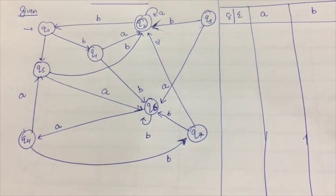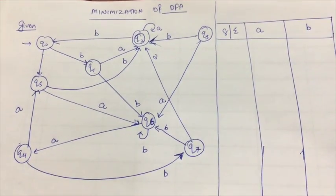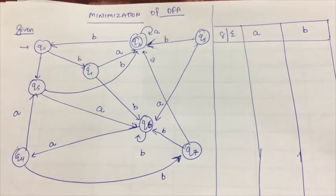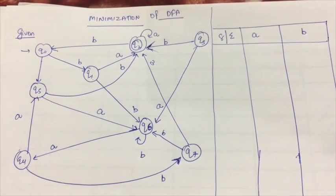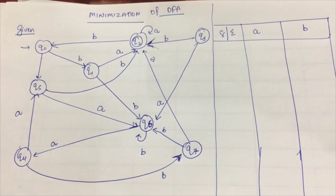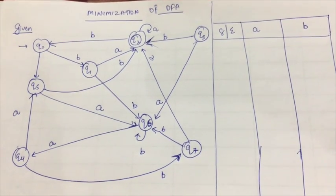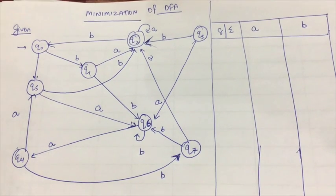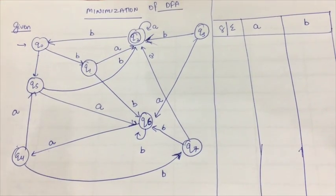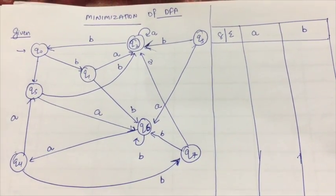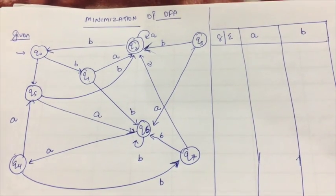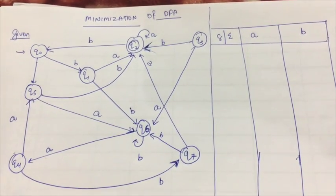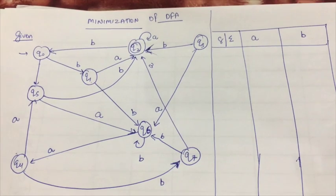Today we are going to study the minimization of DFA. So what is the need of minimization of DFA? Take an example - do we like complex things in life? No. Similarly, when we have unusable states or worthless states or certain states that cannot be reached, or we have some redundancy, that is when the need arises to minimize the DFA.